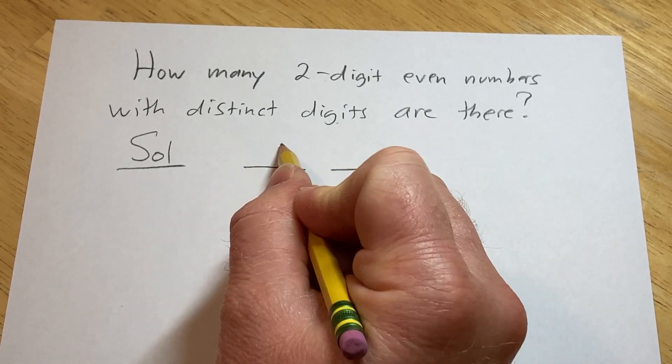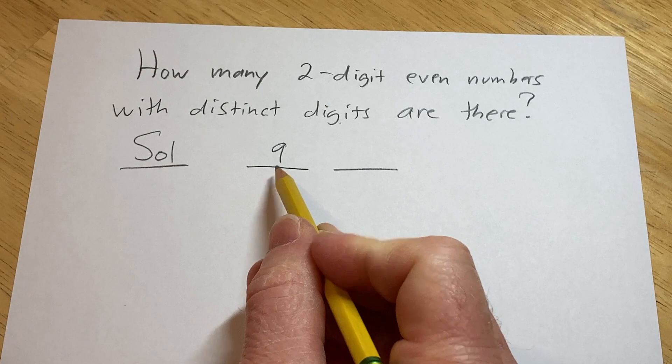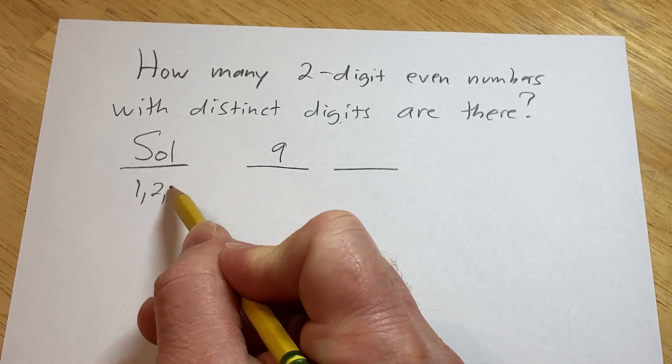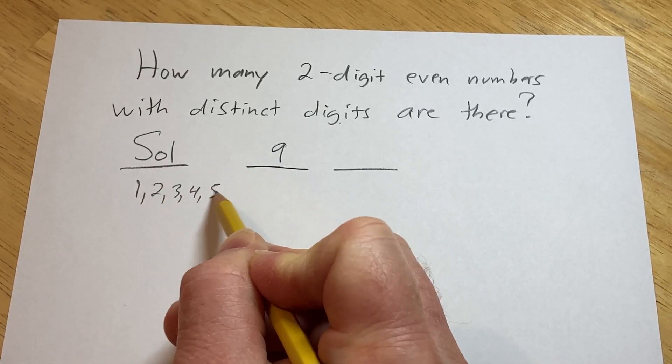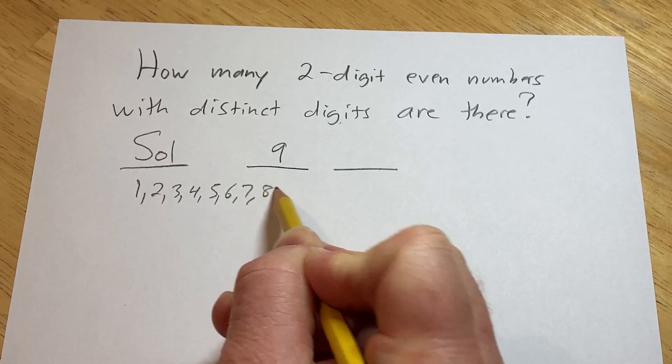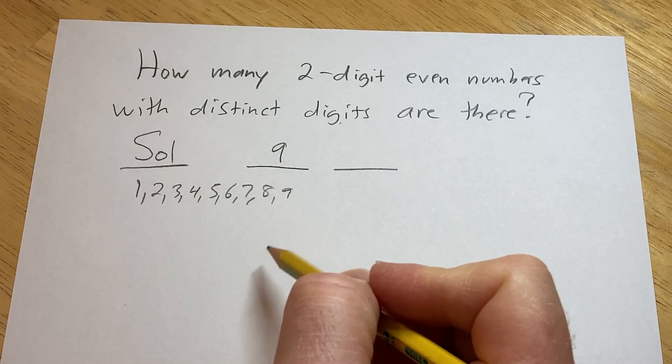There are nine choices for the first digit. That's because the first digit has to be either one, two, three, four, five, six, seven, eight, or nine. Those are the only choices for the first digit.